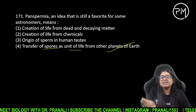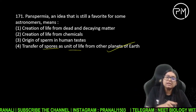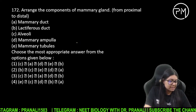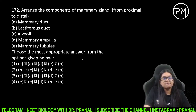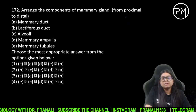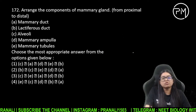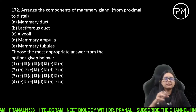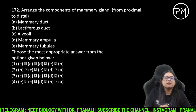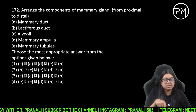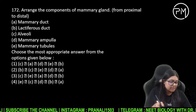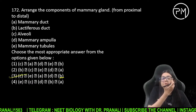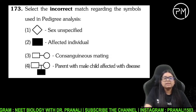Isko sequence mein arrange karna hai — kaise karenge? Sabse pehle breast mein bahut saare lobes hote hain. In lobes ke andar alveoli hota hai jismein milk store hota hai. Phir tubules, phir duct, phir ampulla, aur phir lactiferous duct — toh sabse aakhir mein yaad rakhna ki lactiferous duct aati hai jahan se bachha milk suck kar paata hai.